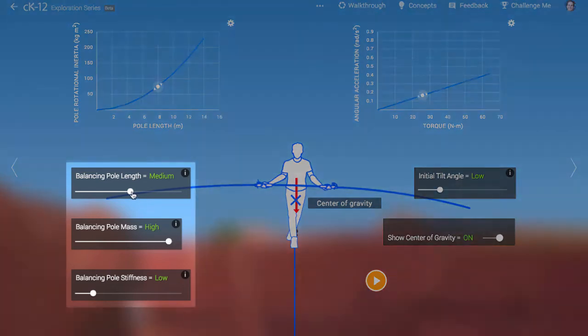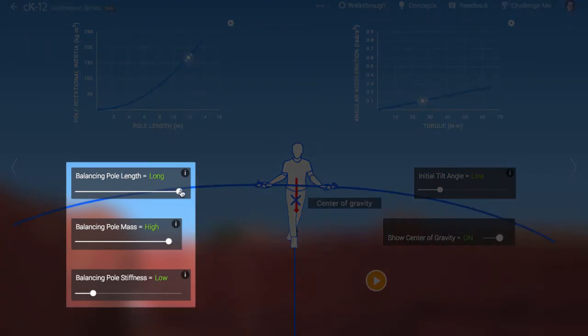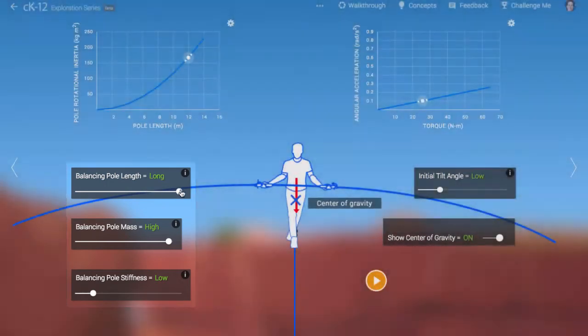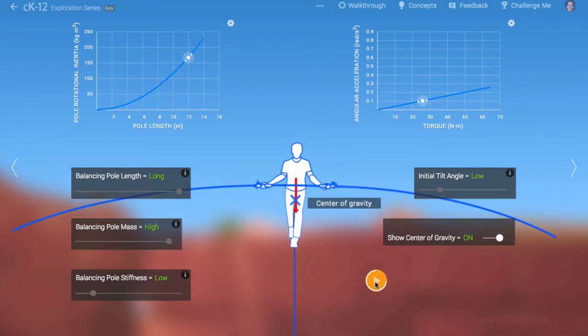The best way to increase his inertia is to have a long, massive tightrope walker's pole. The longer the pole, the more inertia it creates and the more slowly the walker accelerates about the pivot point.